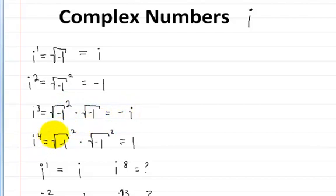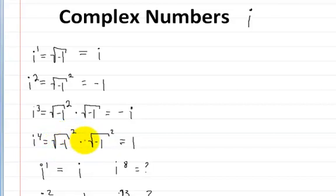For i to the fourth, it's written as the square root of negative 1 squared, times the square root of negative 1 squared. That gives you 1.